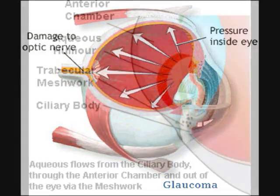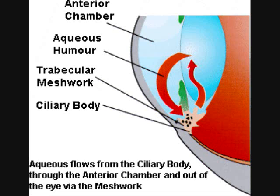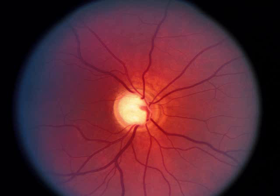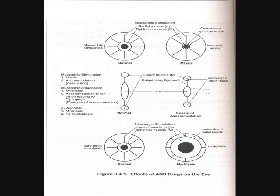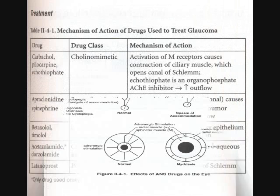One particular condition that affects the eye is glaucoma, and there are two types. Angle closure glaucoma is basically an acute, painful, or chronic condition with raised IOP — intraocular pressure — due to blockade of the canal of Schlemm. Open angle glaucoma is a chronic condition with increased intraocular pressure because of decreased reabsorption of aqueous humor, leading to progressive visual loss. It can be painless, and if left untreated, it will eventually cause blindness. But because of advances in medicine, we do have drugs to treat glaucoma.